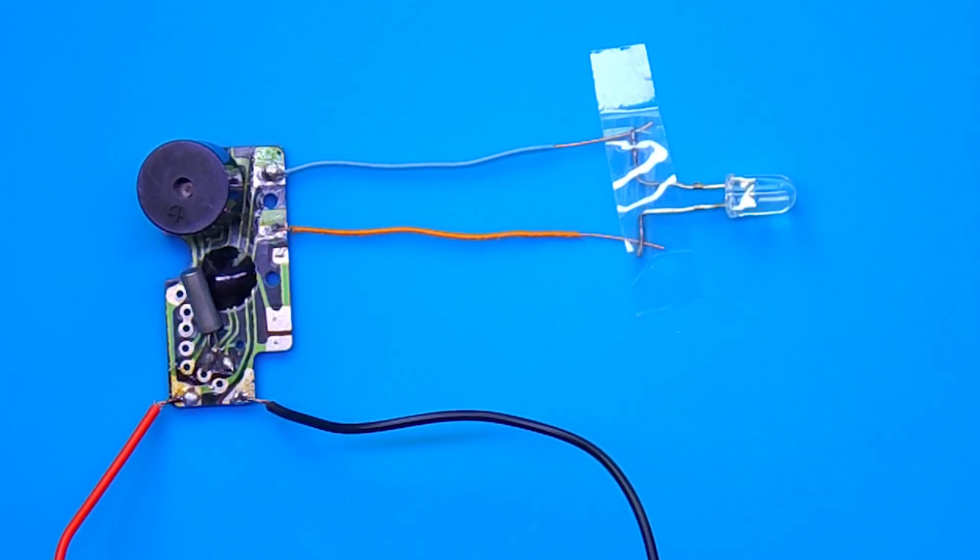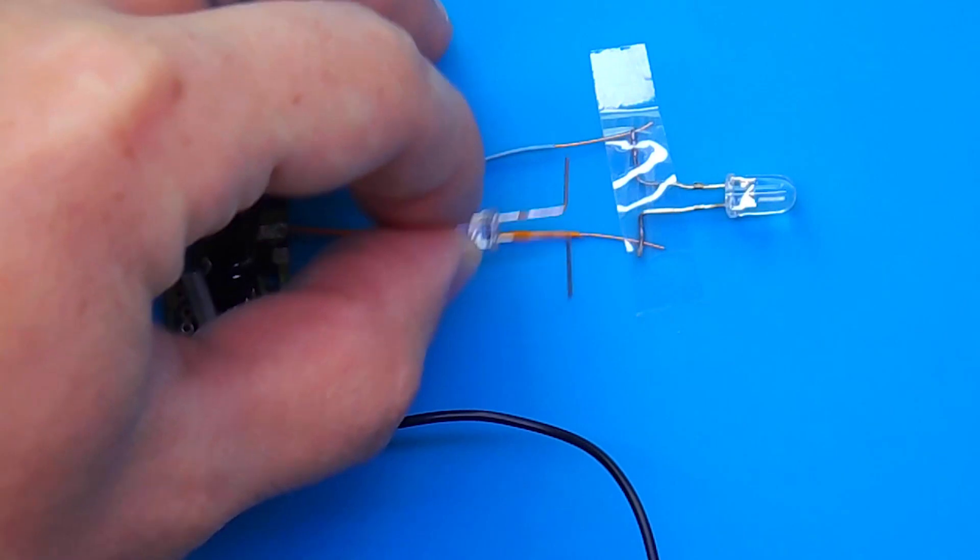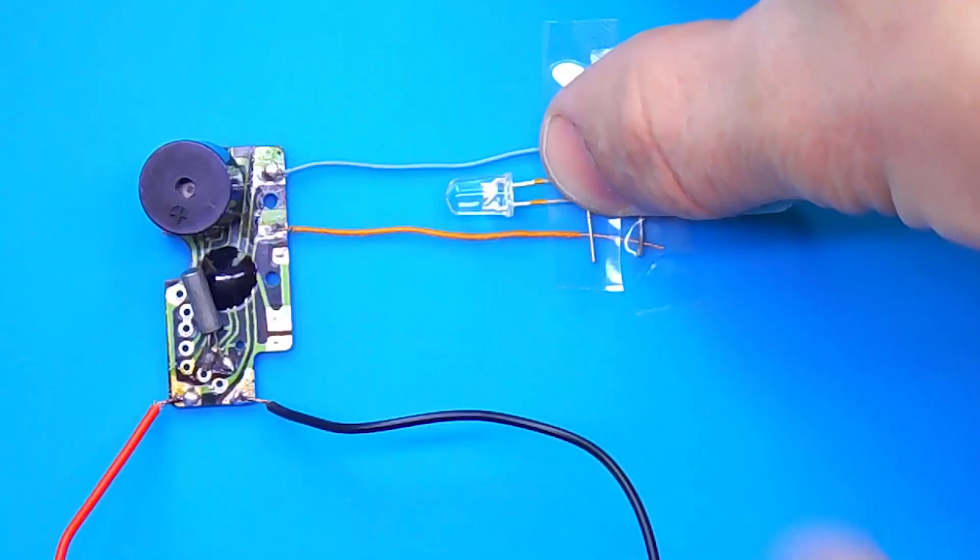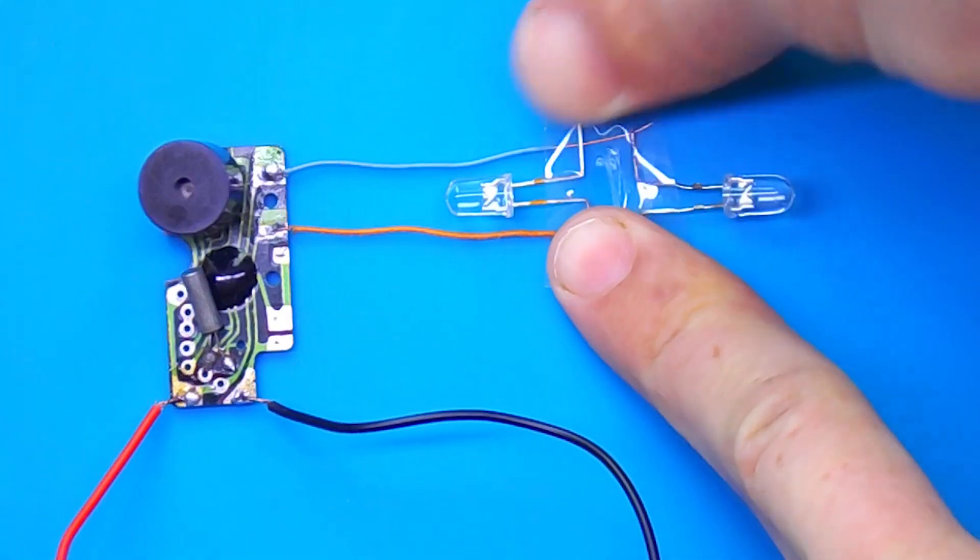The circuit can be made more interesting by adding a second LED. Now, they flash alternately with an interval of 1 second.